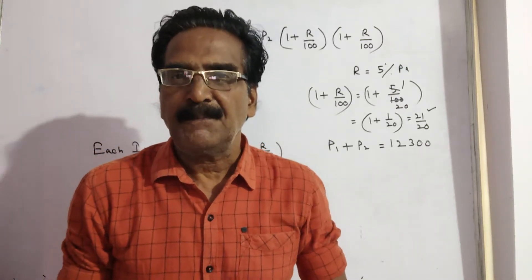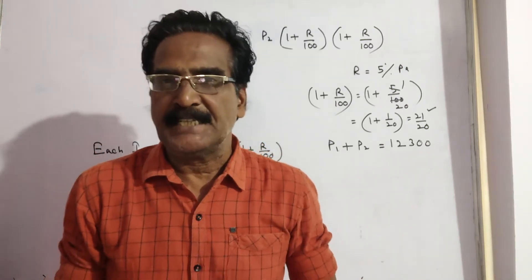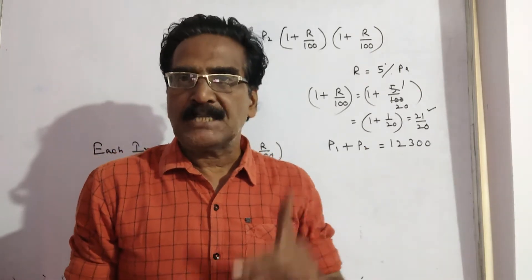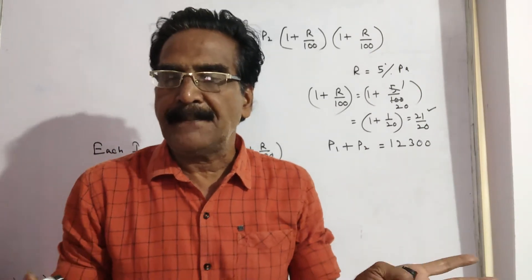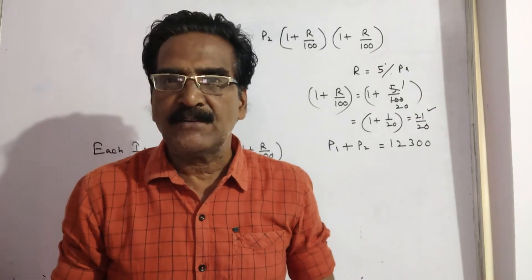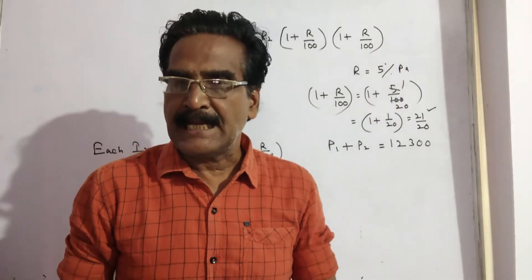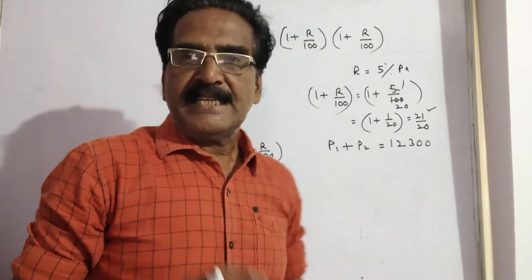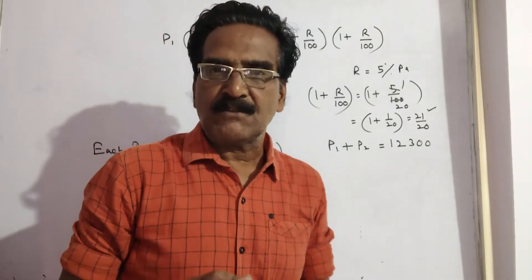Hi friends, good morning. Please look at the next problem in compound interest. A loan of rupees 12,300 is to be repaid in two equal annual installments at 5% per annum compound interest. What is the value of each installment? That is the question.